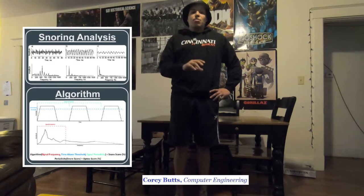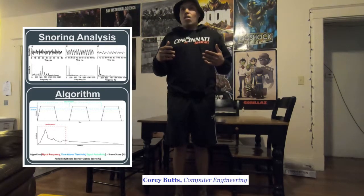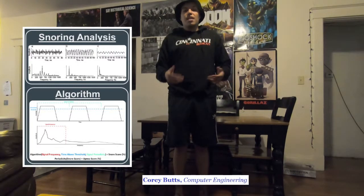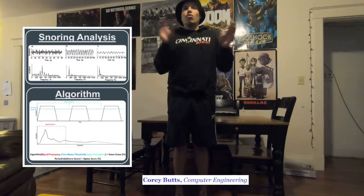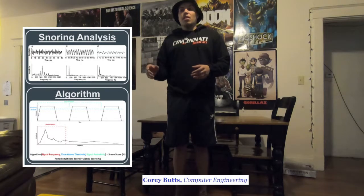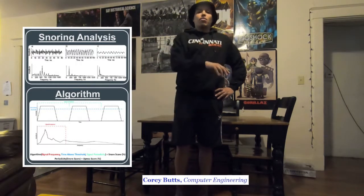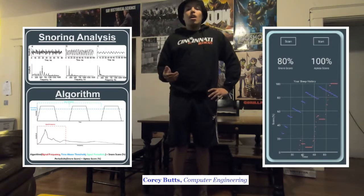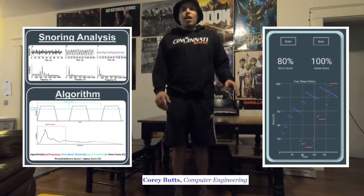Next, the algorithm looks at the signal envelope and determines if it is above a certain threshold for a certain amount of time, because typically one pulse of snoring only occurs for about 0.5 to 2.5 seconds. Thirdly, it checks for the periodicity of those pulses — each pulse, if it is a snoring waveform, should be periodic at a certain frequency. These three parameters are fed into the algorithm, which outputs a snore score from 0% to 100%. A score of 0% means you're not snoring; 100% means the app can almost certainly determine that you are snoring.